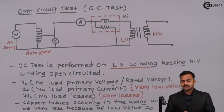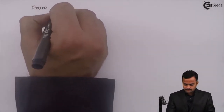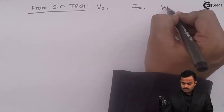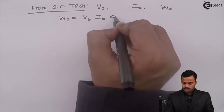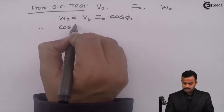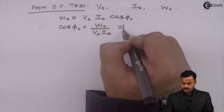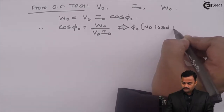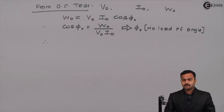Now, what observations can we make from this? From the OC test we got V0, I0, and W0. W0 equals V0 × I0 × cos(φ0). From this I can get cos(φ0), and from that I can get φ0, the no-load power factor angle.